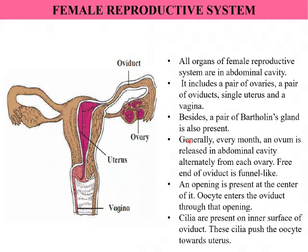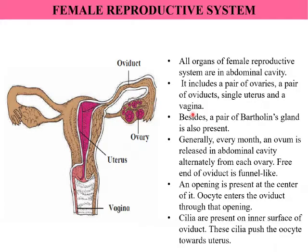Let us now study the female reproductive system. All the organs of the female reproductive system are in the abdominal cavity. In the male reproductive system, we had seen that the testes are present outside the abdominal cavity, but in case of the female reproductive system, all the organs are in the abdominal cavity. They comprise of a pair of ovaries, a pair of oviducts, a single uterus, and vagina.